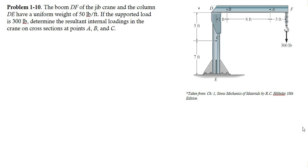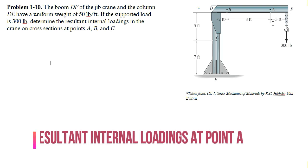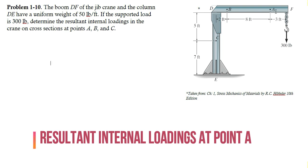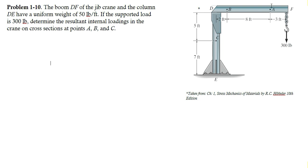Before starting with the solution, if you are new to the channel, please subscribe and click on the bell icon to get regular updates. So let's start with the solution by solving the resultant internal loadings on the cross-section at point A. We have to cut the member at point A and take either portion — in this case, I'm going to take the right portion. To start with the calculation, we have to draw the free body diagram of the right portion.